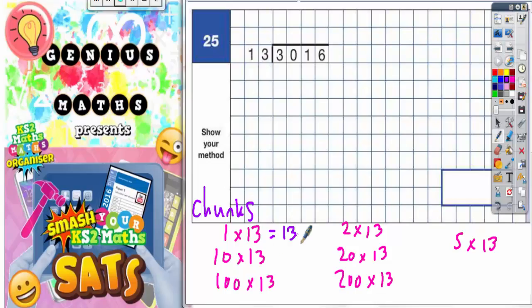So 1×13 is just 13, 10×13 is going to be 130, and 100×13 is going to be 13, but this time with 2 zeros on it, so 1,300.